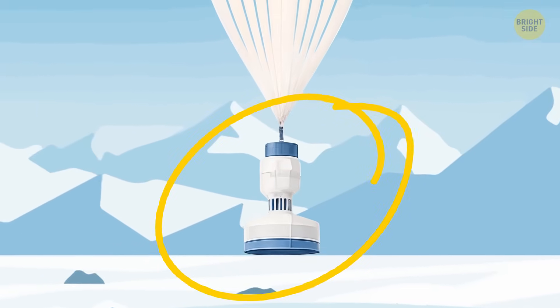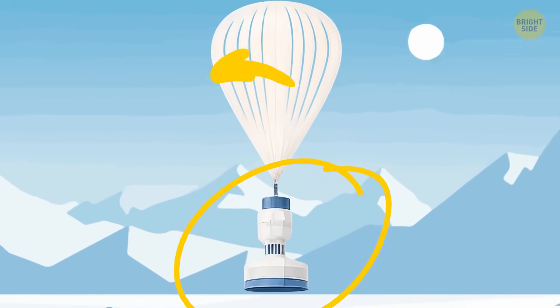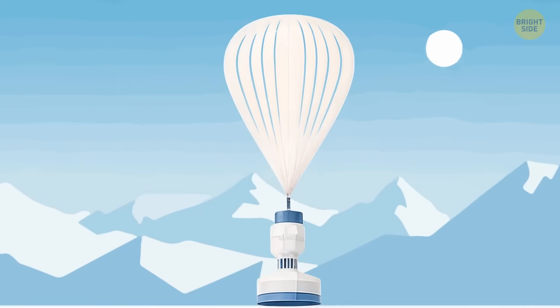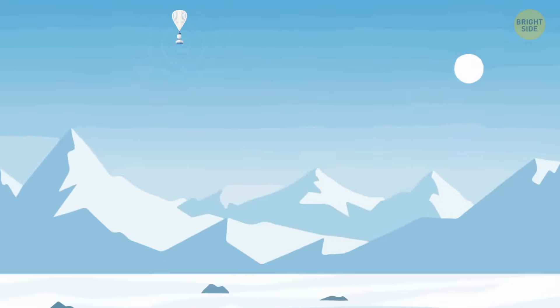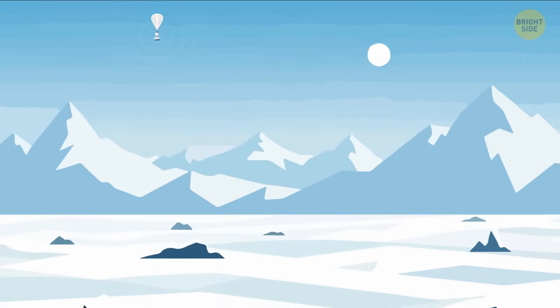They attach a cluster of radio antennas to a giant balloon, send it a few dozen miles up into the sky, and make it float over the endless stretches of white ice. From up there, it points downward, listening for faint radio signals coming from deep inside the ice.